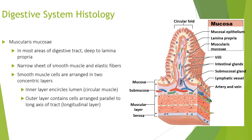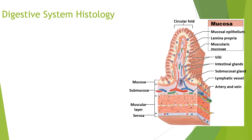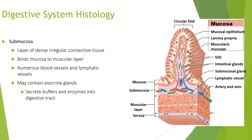The muscularis mucosa lies deep to the lamina propria in most areas of the digestive tract. It is a narrow sheet of smooth muscle and elastic fibres, with smooth muscle cells arranged in two concentric layers: the inner circular layer encircles the lumen, and the outer longitudinal layer has cells arranged parallel to the long axis of the tract. The submucosa is a layer of dense irregular connective tissue that binds the mucosa to the muscular layer. It has numerous blood and lymphatic vessels and can contain exocrine glands that secrete buffers and enzymes.